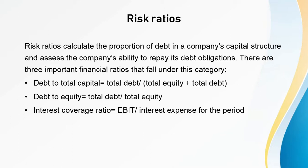There are three important financial ratios under this category. The debt-to-total-capital ratio = total debt / (total equity + total debt). The debt-to-equity ratio = total debt / total equity. The interest coverage ratio = EBIT (earnings before interest and tax) / interest expense for that period. The debt-to-total-capital and debt-to-equity ratios calculate the extent of a company's indebtedness — high values indicate high risk for investors. The interest coverage ratio estimates a company's ability to repay its debt; a high ratio means the company generates enough earnings to cover its debt obligations.